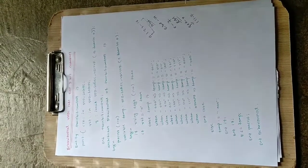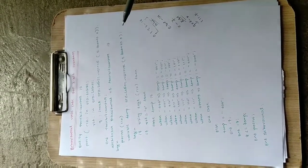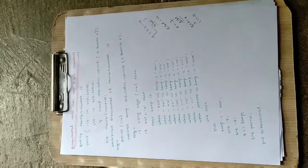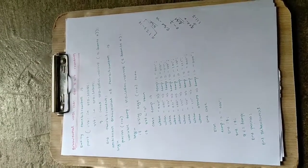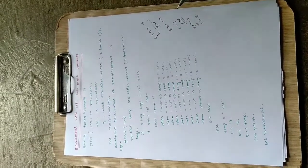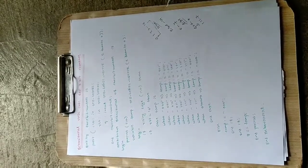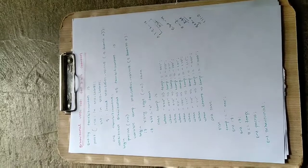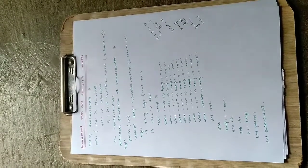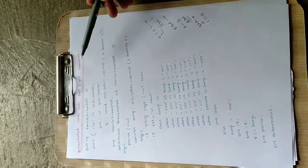That is why it is called a 3-bit counter. Now, how can we write behavioral VHDL code for this using a case statement? Whenever you use a case statement, it becomes very easy to write the code. Note that to write in terms of a case statement, you should know the truth table. I have made a whole series of videos on VHDL and Verilog coding — 100% working codes which I have executed and explained.